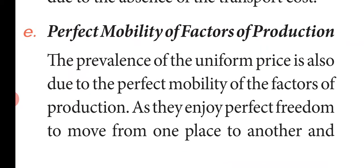Feature 5: Perfect mobility of factors of production. The factors of production can be moved from one place to another. The prevalence of a uniform price is also due to the perfect mobility of factors of production, as they enjoy the perfect freedom to move from one place to another.